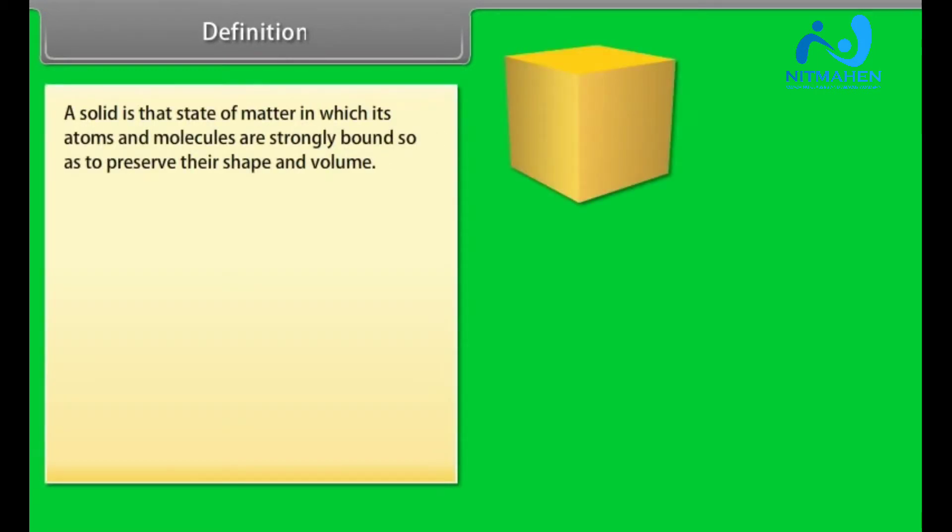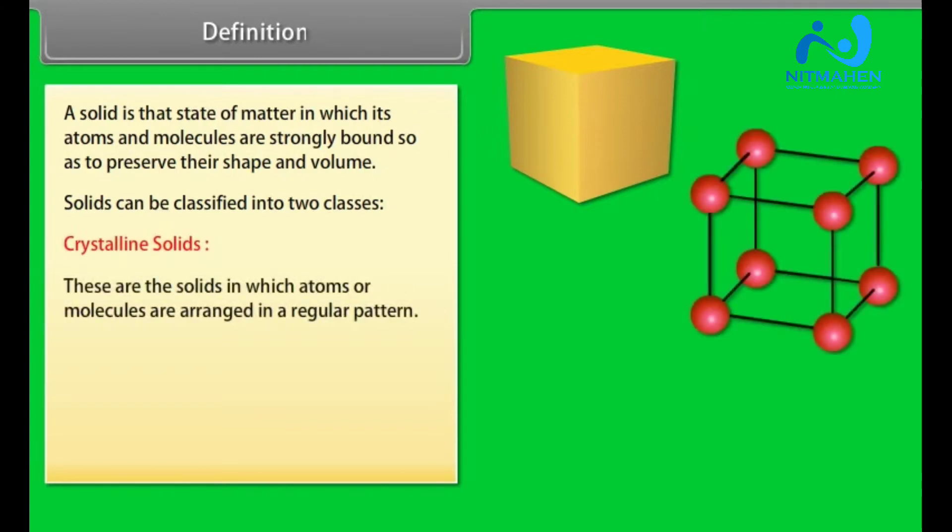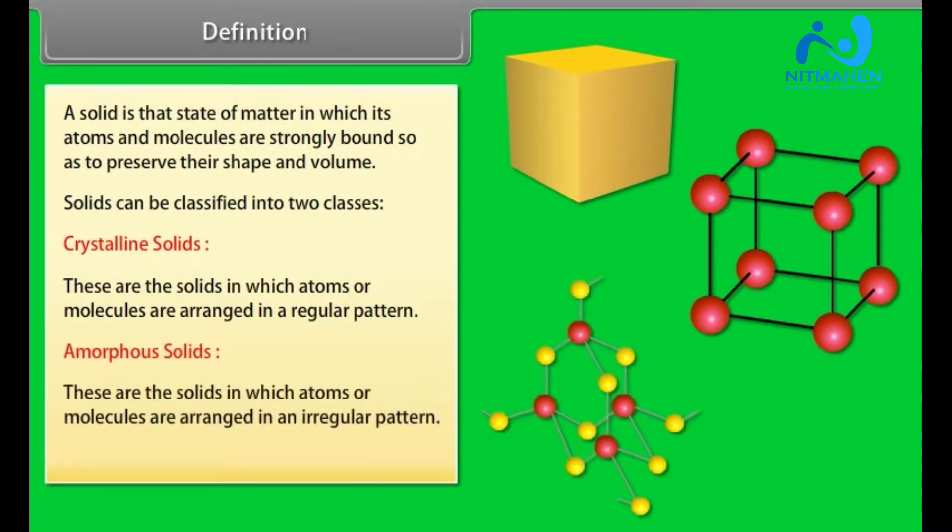Definition. A solid is that state of matter in which its atoms and molecules are strongly bound so as to preserve their shape and volume. Solids can be classified into two classes: crystalline solids, in which atoms or molecules are arranged in a regular pattern, and amorphous solids, in which atoms or molecules are arranged in an irregular pattern. These solids are also called glassy solids.